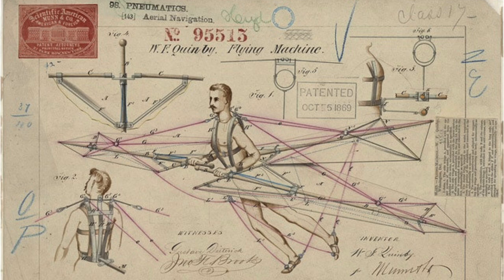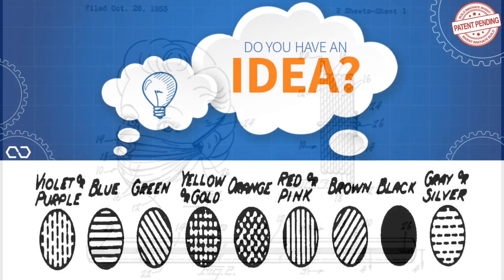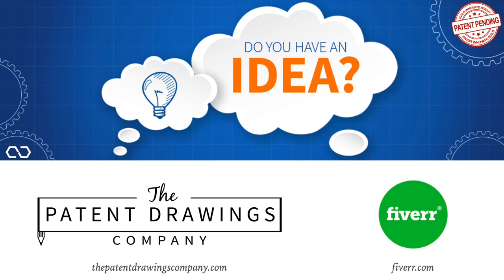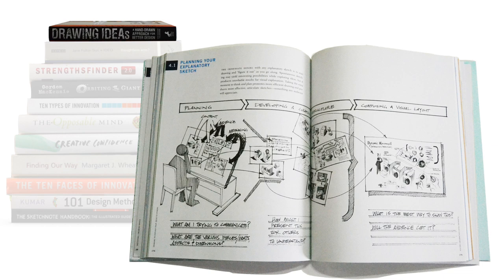Way back, drawings for patents were very elaborate, colorful, and even showed facial expressions. Nowadays, they are very rudimentary, simple, and usually black and white. If you do have to refer to colors, you can use different shades to allude to a particular color. If you don't feel like you are talented to draw, you can use companies like PatentDrawingsCompany.com or even hire a person on Fiverr.com to do that kind of job for you. But what helped me the most was the book Drawing Ideas: a hand-drawn approach for better design by Mark Baskinger and William Bardell — they helped me simplify my drawings into something that the patent office would be happy with.